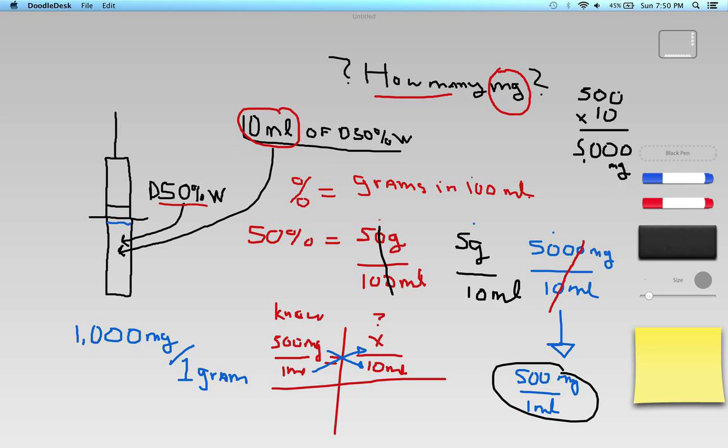So I have given—if the paramedic or EMT on scene administered 10 milliliters of this dextrose 50%, then we can say that that patient received a total of 5,000 milligrams of medication.